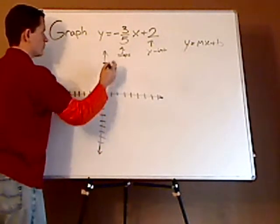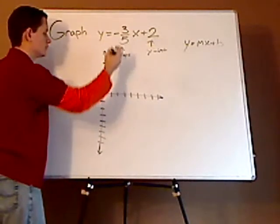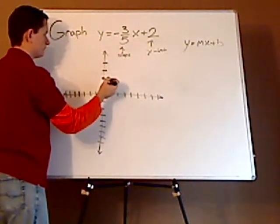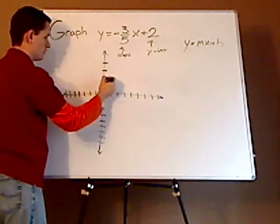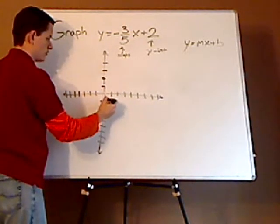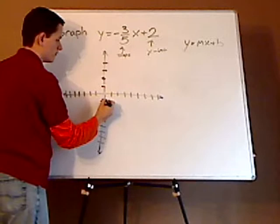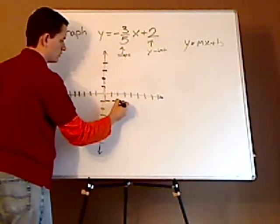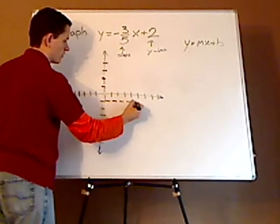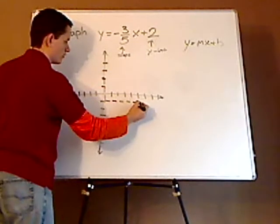Now your next point is going to be based upon the slope. So you're going to go down 3: 1, 2, 3, and then over 5: 1, 2, 3, 4, 5. And then draw your second point.